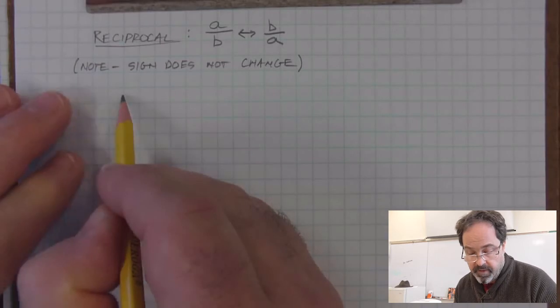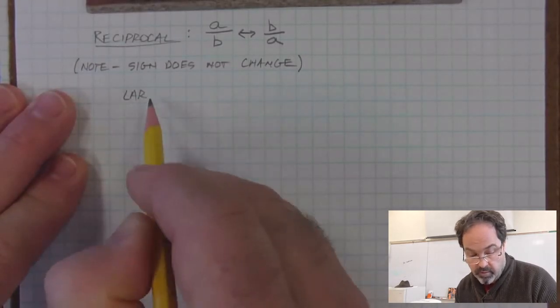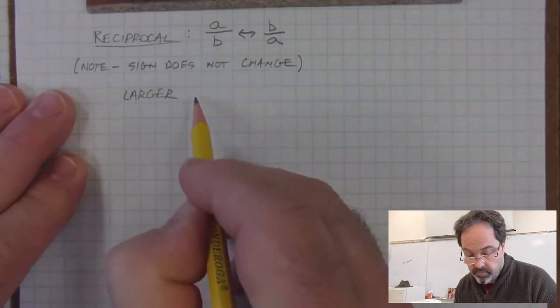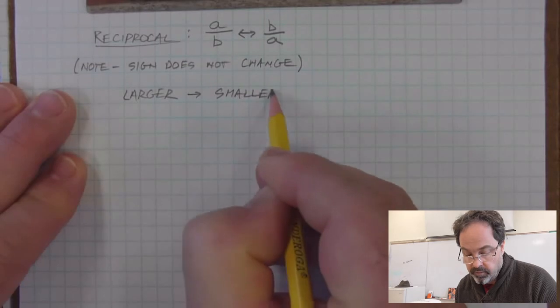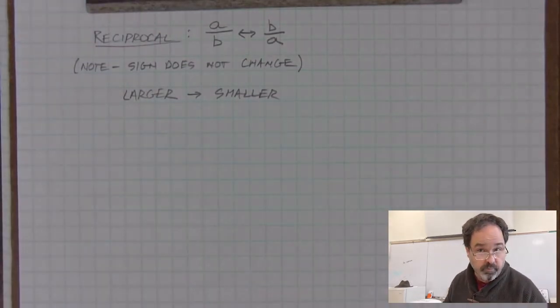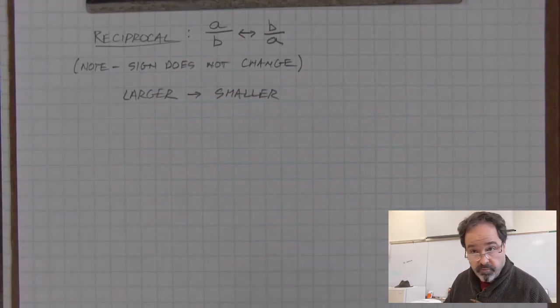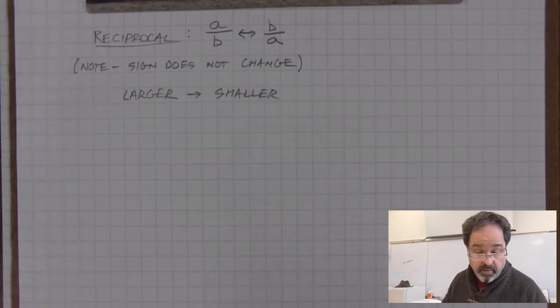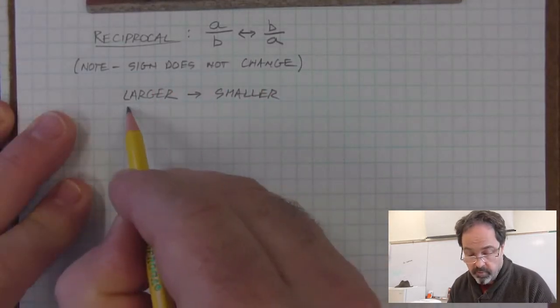Here's something that happens with reciprocals in general. Larger numbers, when you take the reciprocal, become smaller. The larger the number, the smaller the reciprocal. Imagine 10. 10's not very large. Its reciprocal is one-tenth. But if you have a larger number than 10, like a million, its reciprocal one-millionth is smaller. So the general trend, larger the number, smaller the reciprocal.